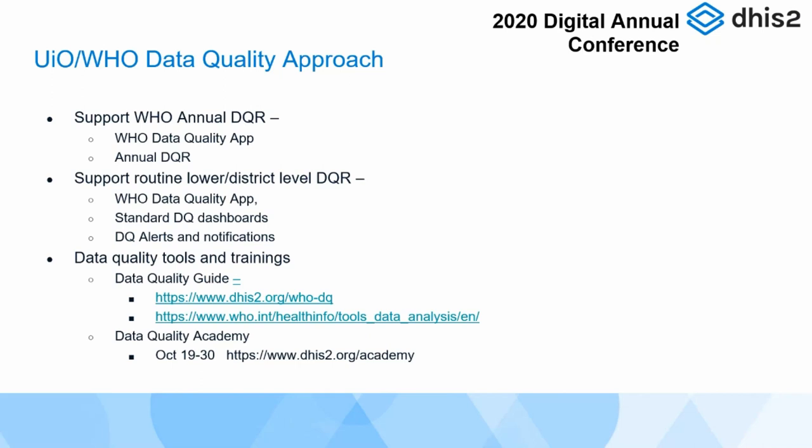We are also trying to summarize and produce all of this information into a data quality academy. We have the next data quality academy coming up — it's a level two academy, meaning you need to be a bit proficient with DHIS2. We'll get fairly technical on how to configure DHIS2 for data quality checks and advanced functionalities. That academy is coming up October 19th through 30th, and registration is open on our website, DHIS2.org/academy.